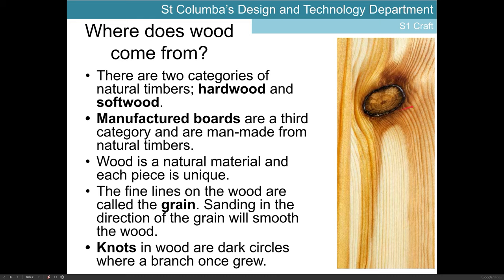Something else we might see when working with natural timbers are knots. We can see one here — I'm circling it on screen. These are darker circles in the timber and they indicate where a branch once grew on the tree. They tend to be very hard and fairly solid, and when we come to cut through them, particularly if we're trying to cut a joint in that location, they can be very difficult to work with. We try to avoid working with knots when we can, although they do add an aesthetic appeal to the wood. In some high-end furniture that is desired, but for us in the workshop we try to avoid them.